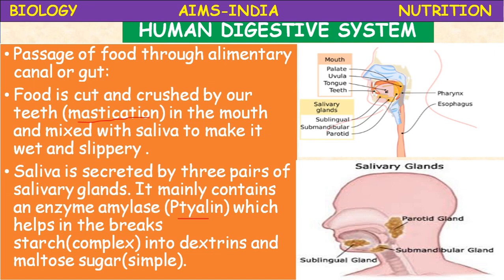In the oral cavity there is a tongue, teeth, and a buccal cavity where three pairs of salivary glands are present: sublingual, submandibular, and parotid glands. The parotid glands are located near the ear, the sublingual glands are beneath the tongue, and the submandibular glands are beside them. These glands secrete saliva containing the enzyme ptyalin. The partly digested food in the mouth is called bolus (B-O-L-U-S).